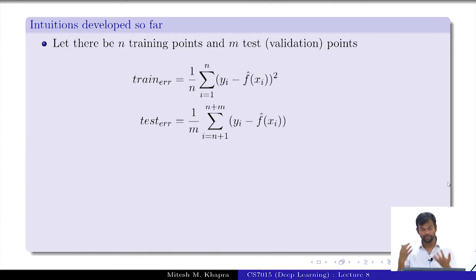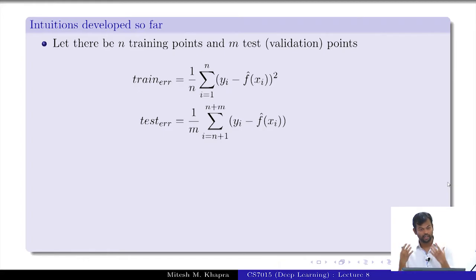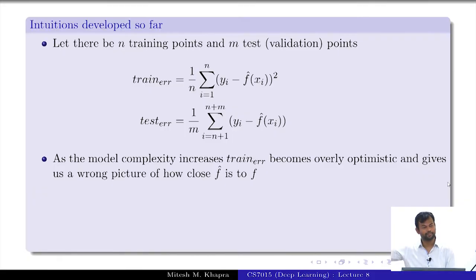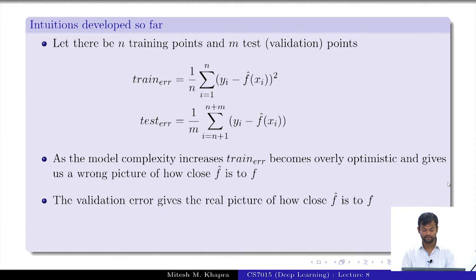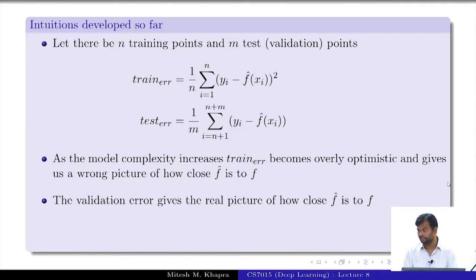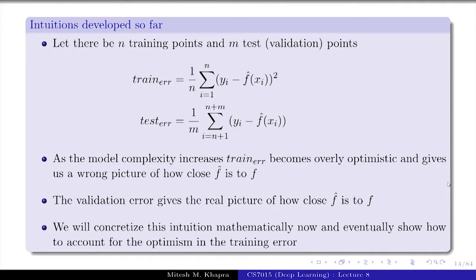Training error is computed from the training points — the points you actually look at while solving the optimization problem. Test error is what you eventually want to use. We realize the training error is more optimistic, while the test error gives us the real picture. This ties back to always splitting data into training, validation, and test.